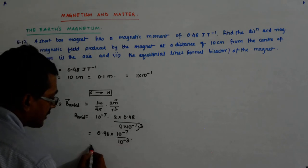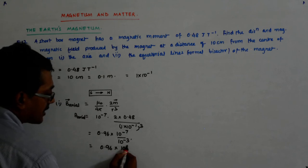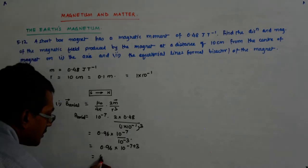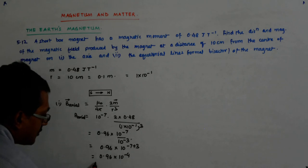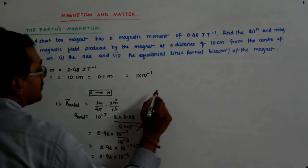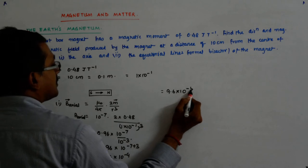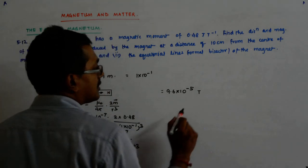So that becomes 0.96 into 10 to the power minus 7 upon 10 to the power minus 3, which is 0.96 into 10 to the power minus 4, which is in the standard form 9.6 into 10 to the power minus 5 tesla.